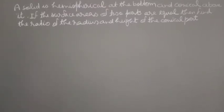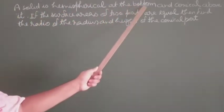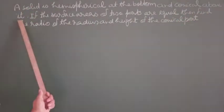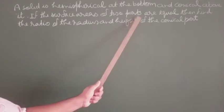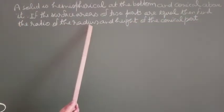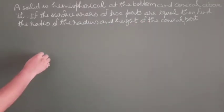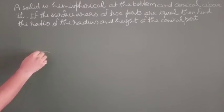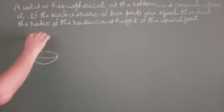Hello students, let us solve the question of mensuration. A solid is hemispherical at the bottom and conical above it. If the surface areas of two parts are equal, then find the ratio of the radius and height of the conical part. You can see it is hemispherical at the bottom and conical above it.